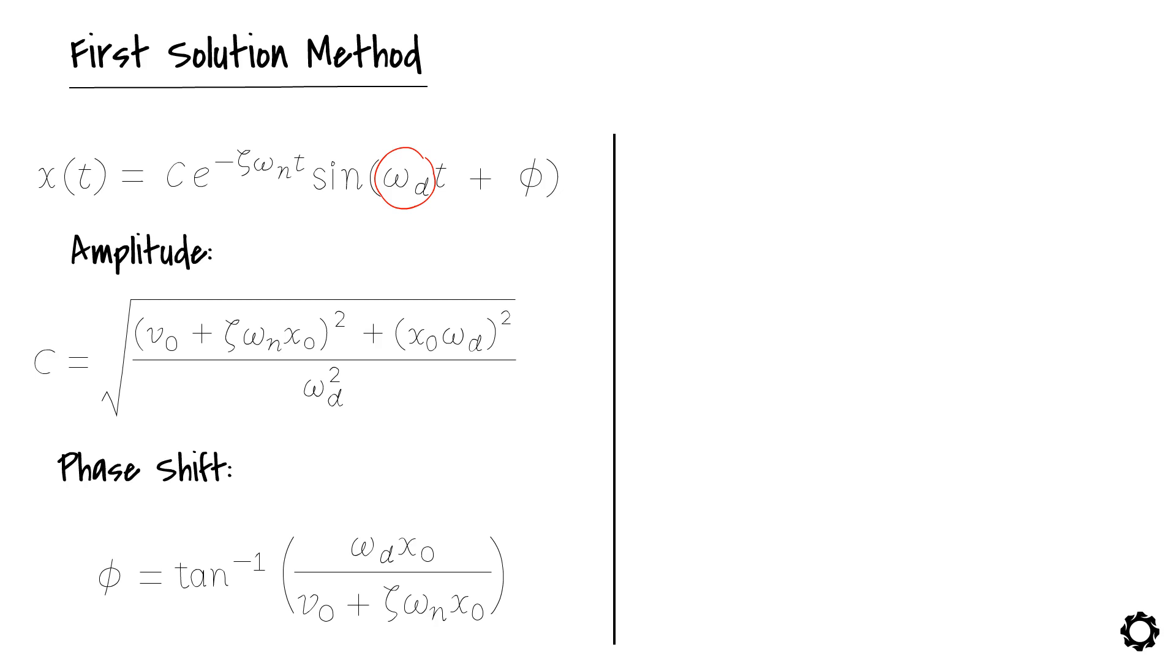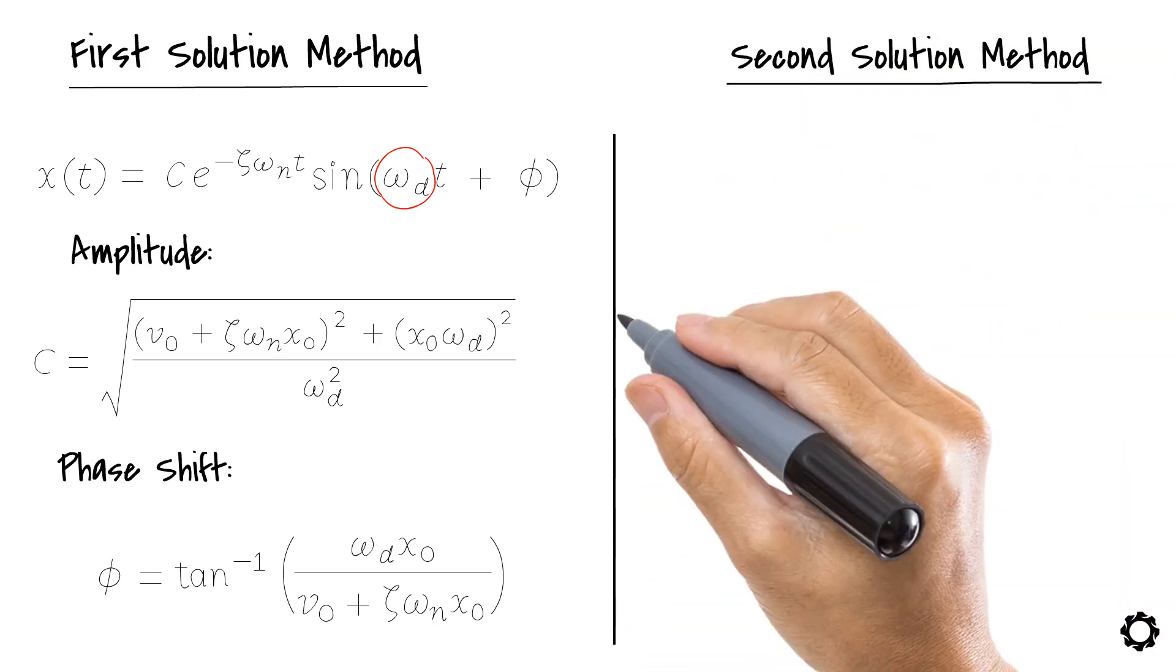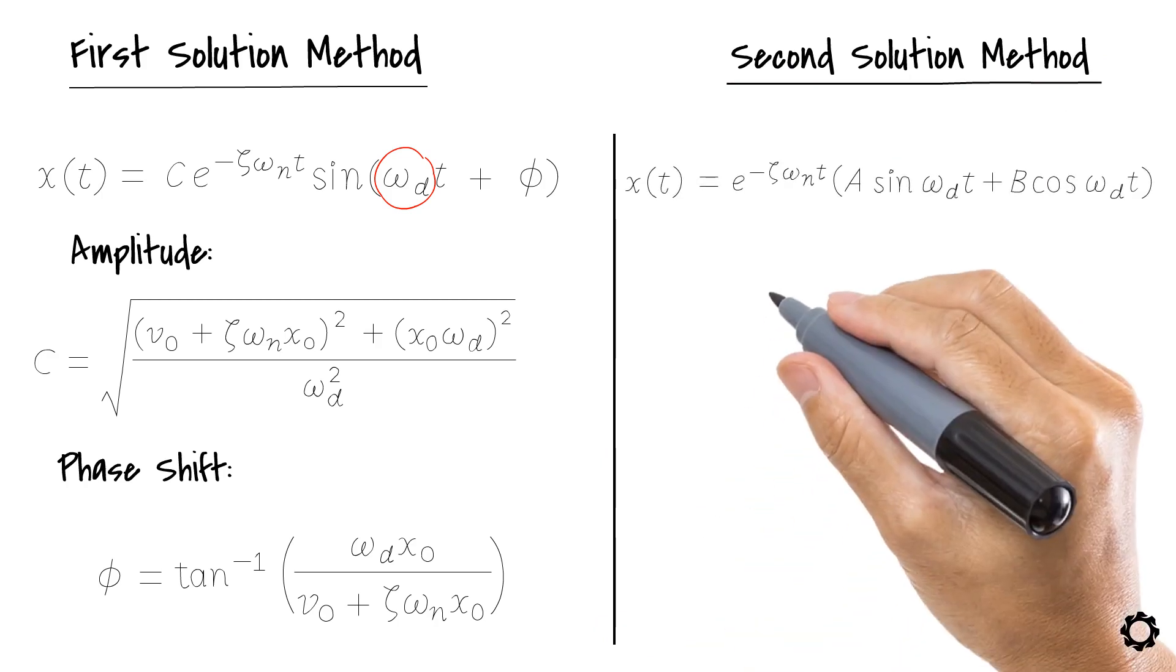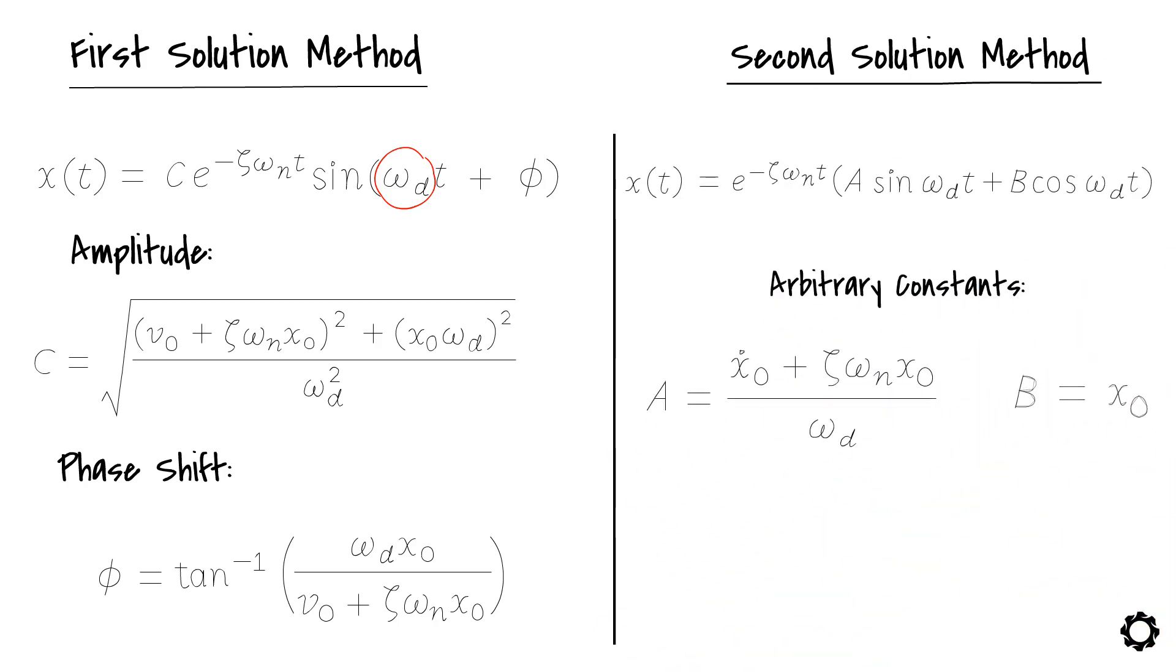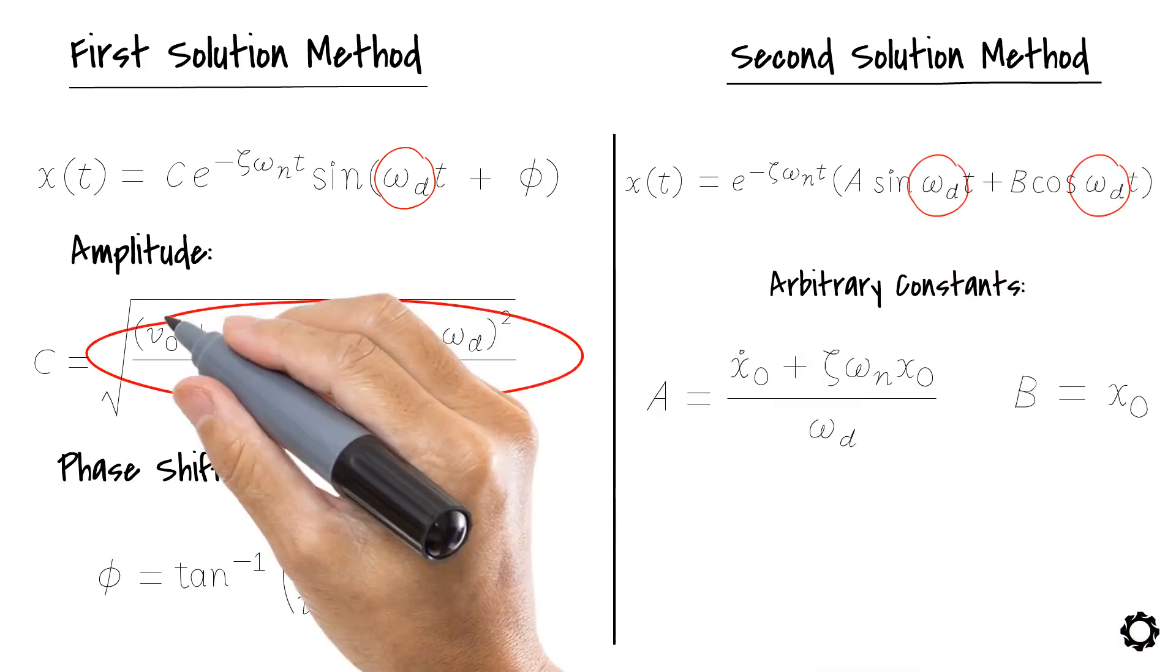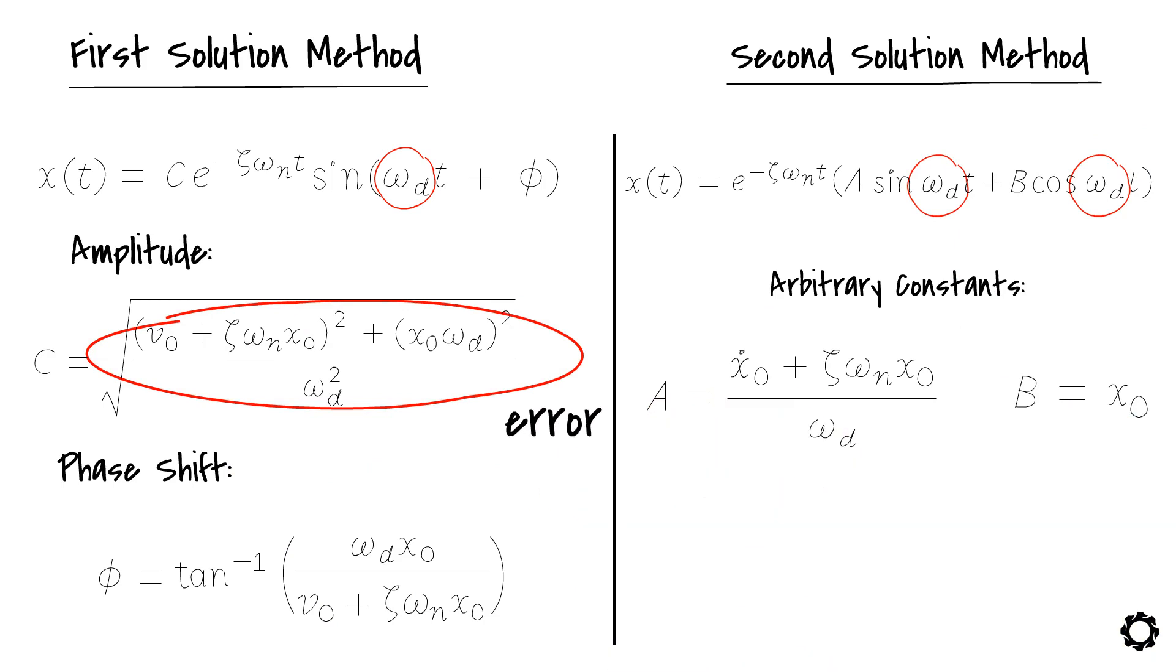Before that, let's take a look at what kind of changes are applied to the second solution method. As you can see, we introduced the damping ratio and that unfamiliar omega d term also into this method's equations. Keep in mind that just like the undamped case, the first solution could present errors due to possible negative values. Therefore, the second solution method is preferred.